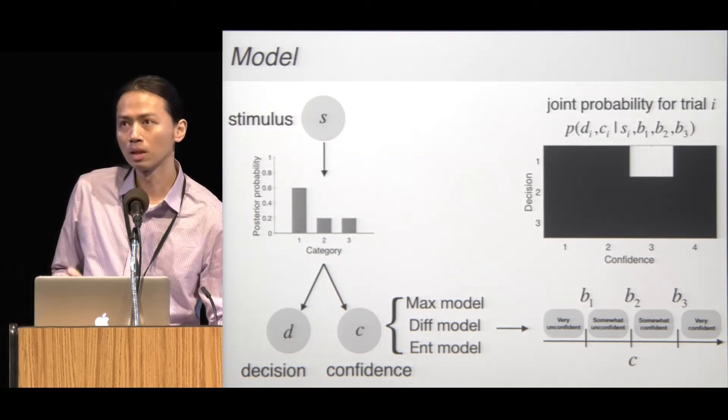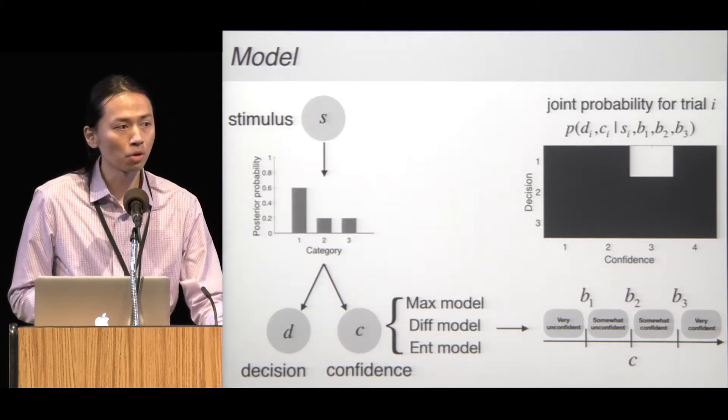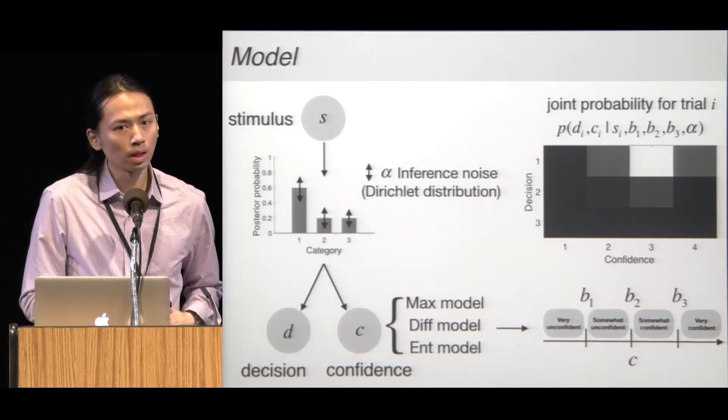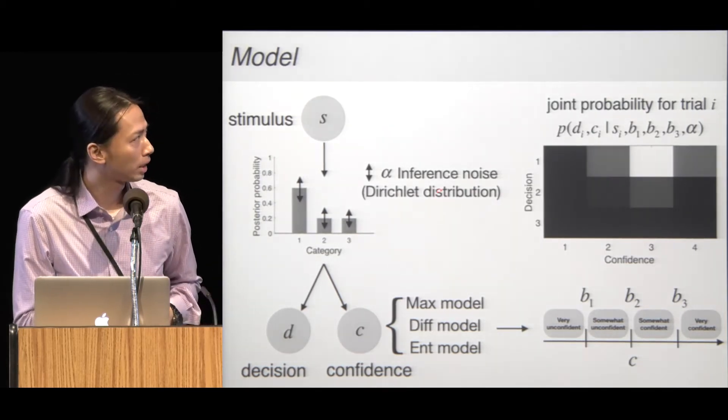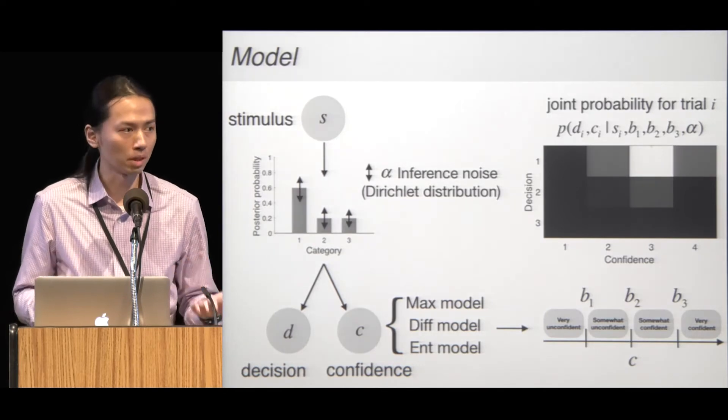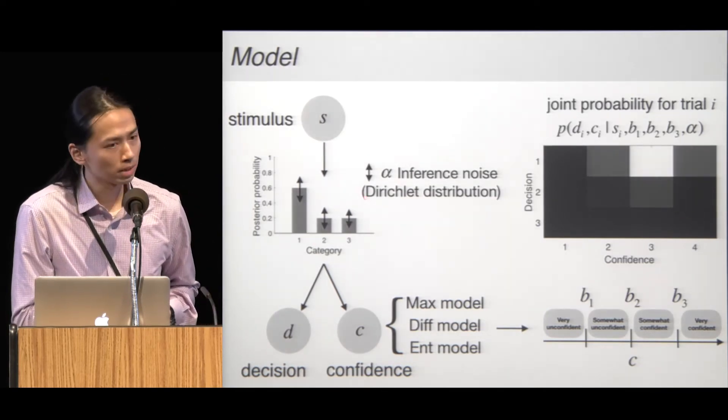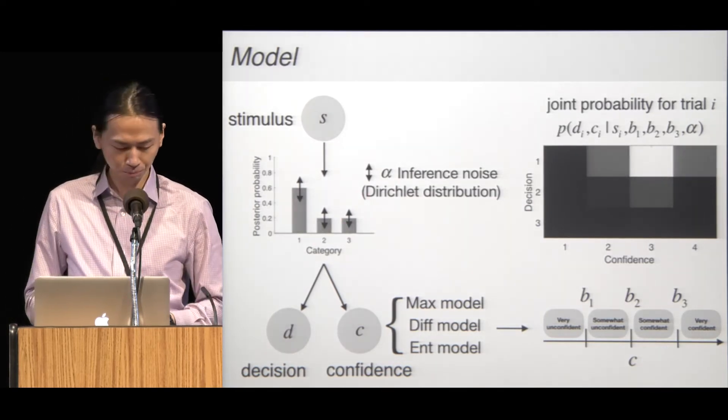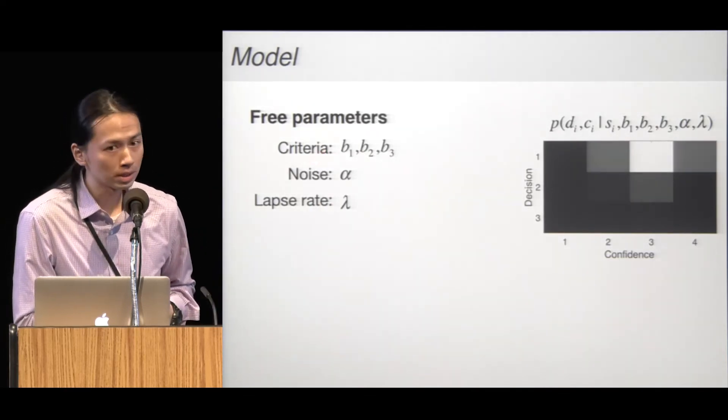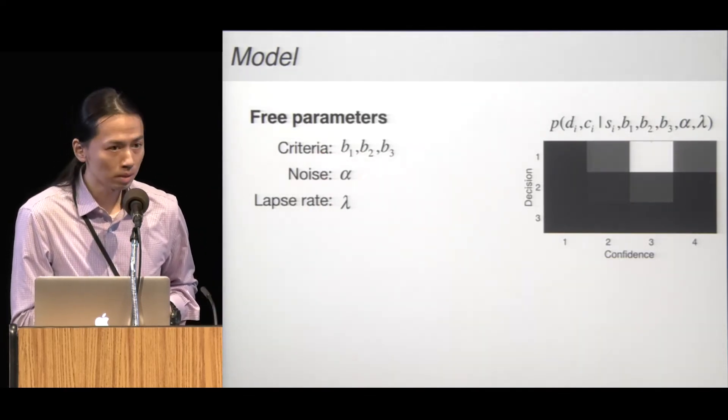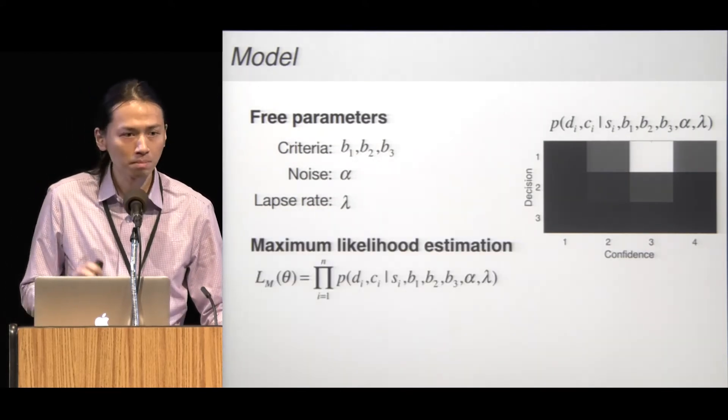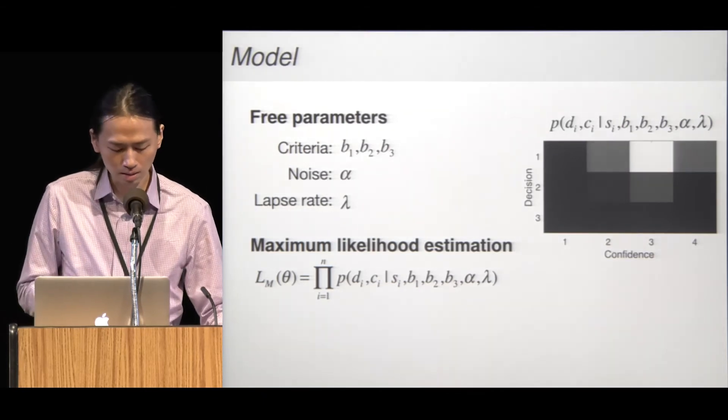But without any noise, the model's behavior is deterministic. So we let the response be probabilistic by injecting noise. We assume that observers perform a noisy inference, so noise is injected in the posterior distribution. These are the three parameters in the model, including criteria, the strength of noise, and we also included one lapse rate.